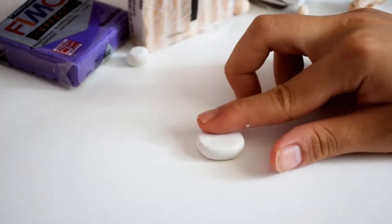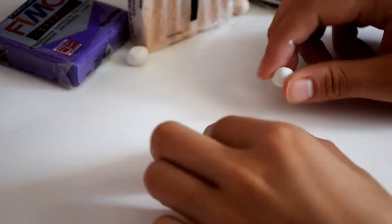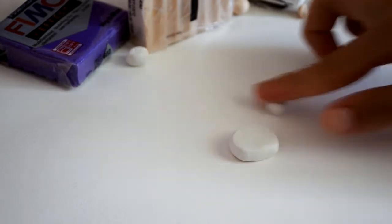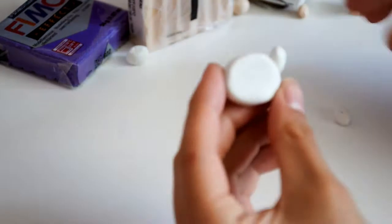For Finn's head, you're gonna shape a piece of white polymer clay into a flattened out oval, and you're gonna shape two cylinders for his ears.